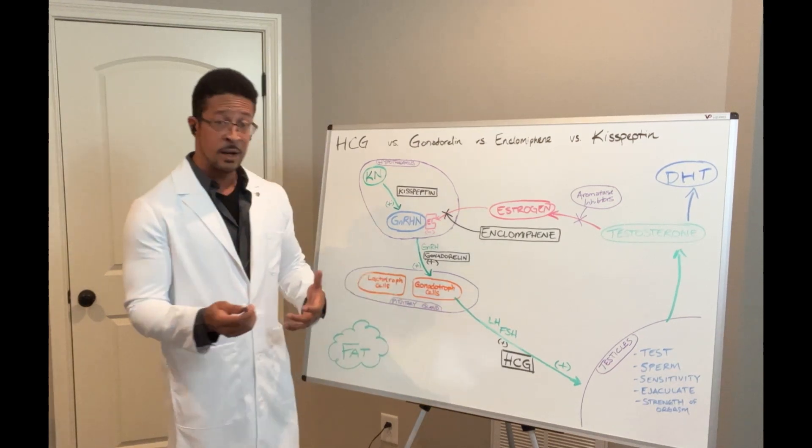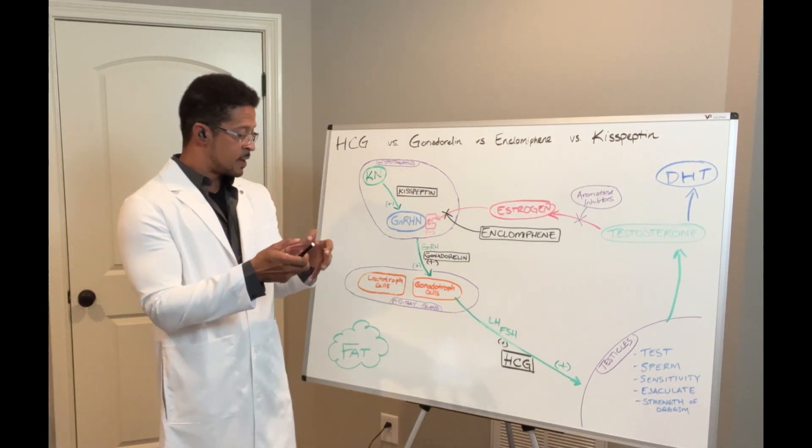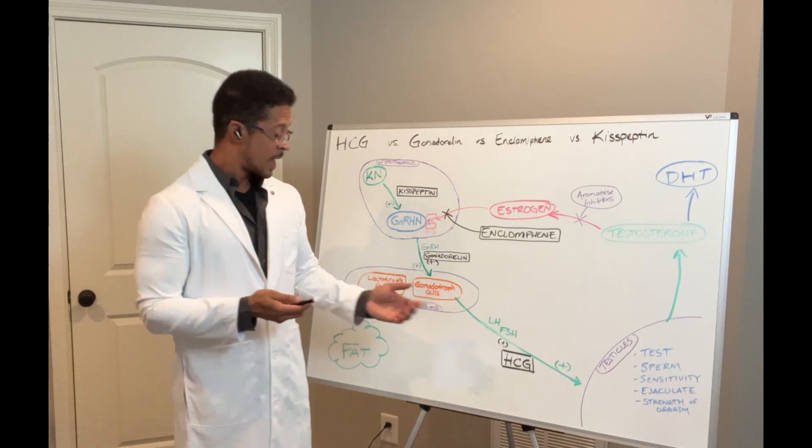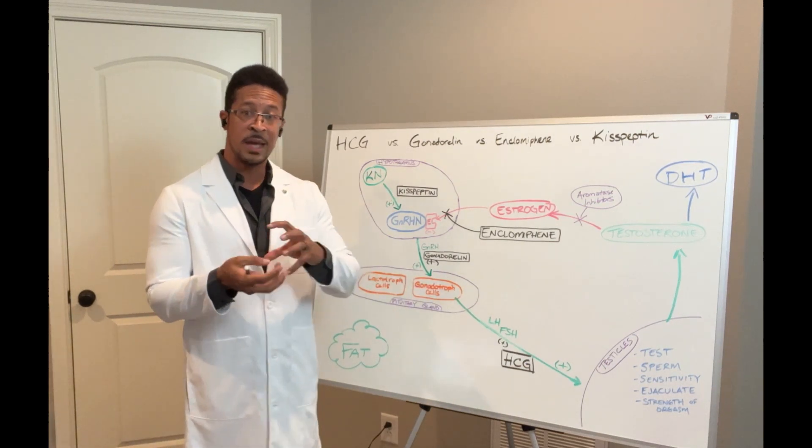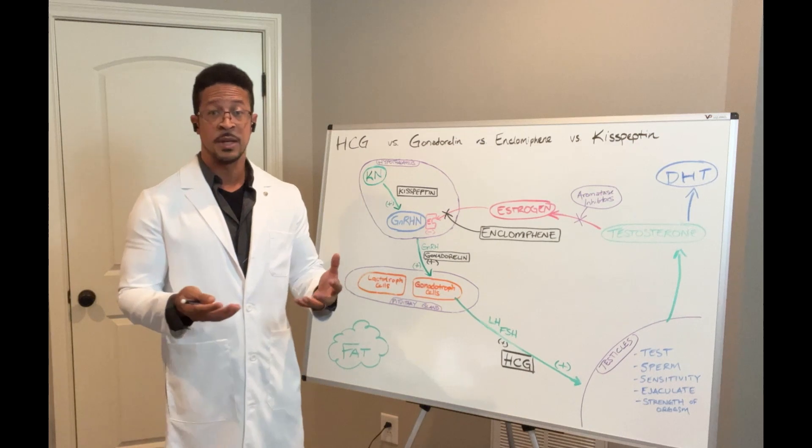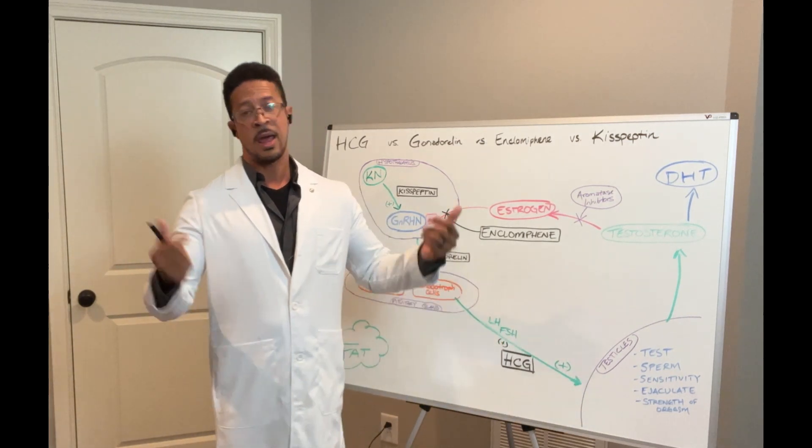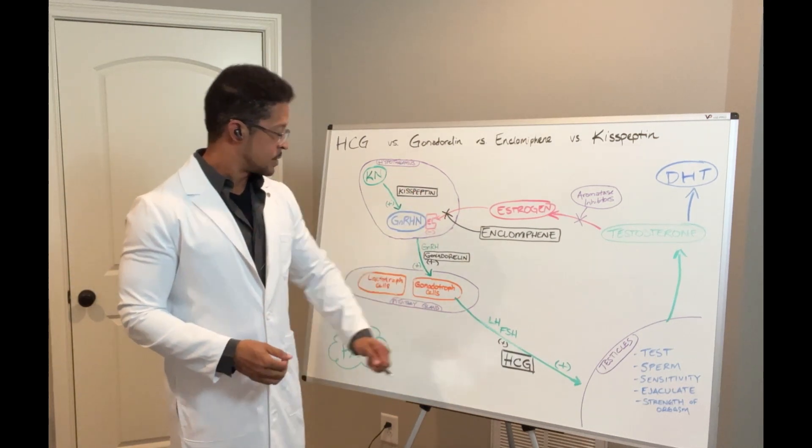LH and FSH come down and stimulate the testicles. Let's say this is a part of your cascade that's having an issue. HCG is an analog, which means it looks structurally very similar to your LH and FSH. So the way these hormones work, they activate the next step, kind of like a lock and key mechanism. Your HCG mechanically looks like a replacement key for your LH and FSH. It stimulates the factory and hey, we got lights on again. So that's how that part works.